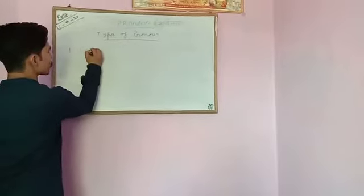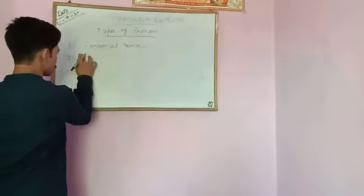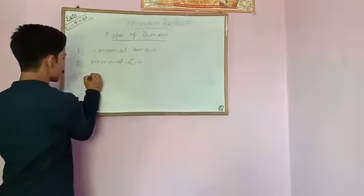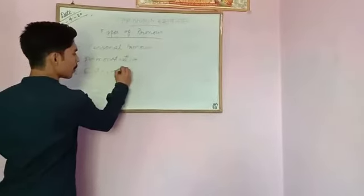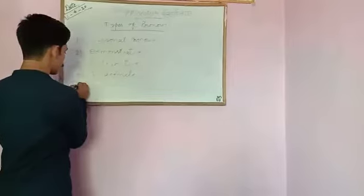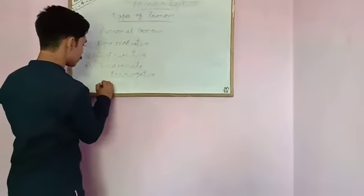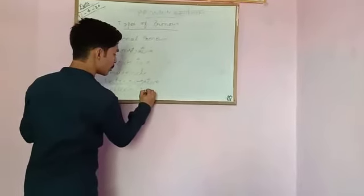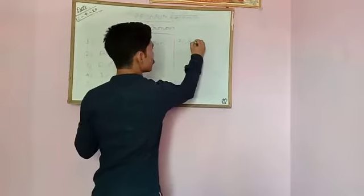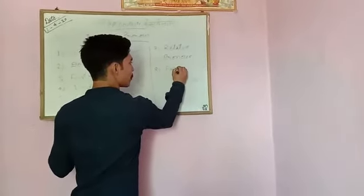The first one is personal pronoun. Second, demonstrative pronoun. Third, distributive pronoun. Fourth, indefinite pronoun. Fifth, interrogative pronoun. Sixth, reflexive or emphatic pronoun. Seventh, relative pronoun. And the last one is possessive pronoun.